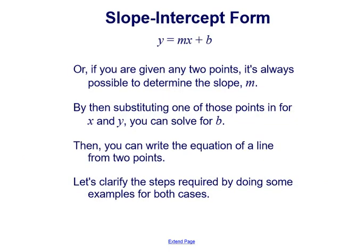Or, if you are given any two points, it's always possible to determine the slope m using the slope formula. So by substituting one of those points in for x and y, you can solve for b. Then you can write the equation of a line from two points. Let's clarify the steps required by doing some examples for both cases.